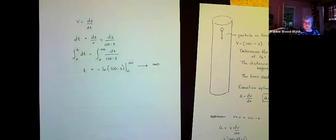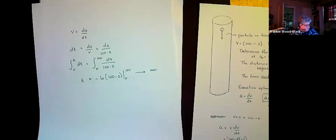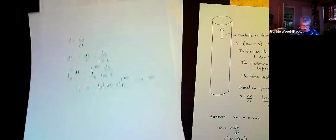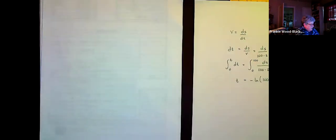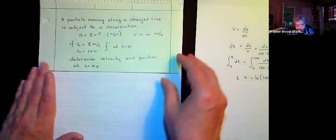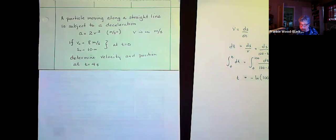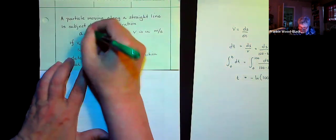It's a nice way to start introducing fluid dynamics into our situation here. Let's do another example, and this time I'm just going to talk through it. We're going to start with a particle that's moving along a straight line and it's subject to a deceleration — and if it's a deceleration, we know it's got to be negative.